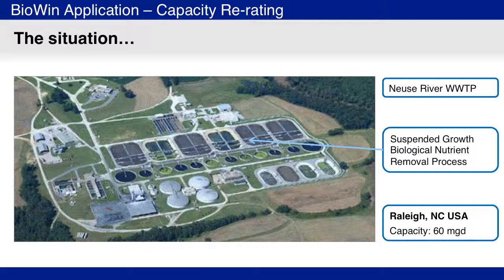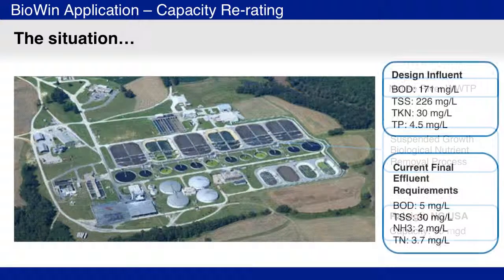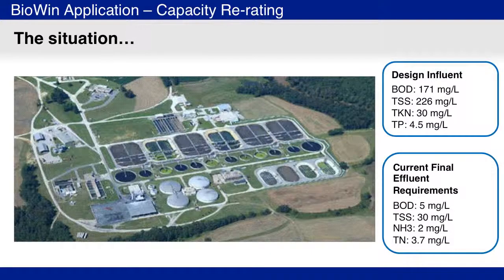This plant is an advanced nutrient removal process with anoxic zones and methanol addition for nitrogen removal, and alum addition for phosphorus removal. The plant also uses 12 denitrifying sand filters. The influent is typical for North American municipal wastewater. The design average daily flow rate is 60 million gallons per day. The plant has consistently met its effluent requirements, which include BOD, total nitrogen, and total phosphorus limits. It has been recognized by the US Environmental Protection Agency for both outstanding permit compliance and its biosolids reuse program.